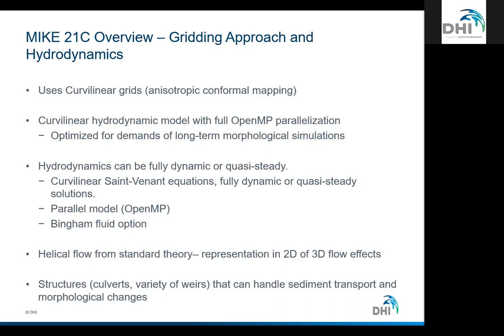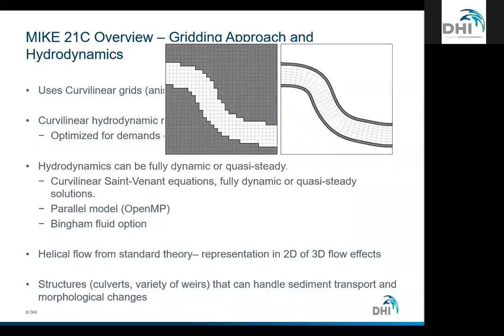We've spent a lot of time on full parallelization and optimization of MIKE 21C, with the primary goal of enabling long-term morphological simulations. On the left is an example of a rectilinear grid, where the gray areas are wasted cells that, although you're not doing calculations in them, still occupy data space and have overhead. With the curvilinear grid, you're really optimizing your grid overlay.